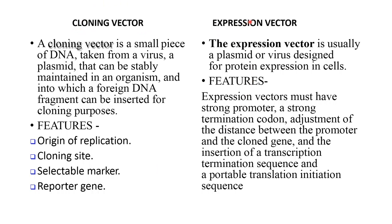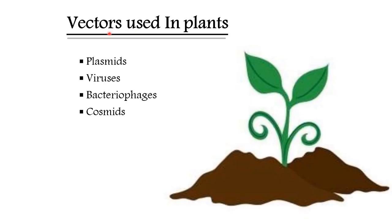An expression vector is usually a plasmid or a virus designed for protein expression in cells. The features of an expression vector include a strong promoter, a strong termination codon, adjustment of the distance between the promoter and the cloned gene, insertion of transcription termination sequence, and a portable translation initiation sequence. Vectors used in plants are plasmids, viruses, bacteriophages, and cosmids.